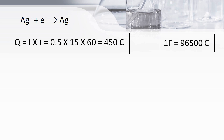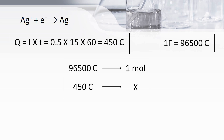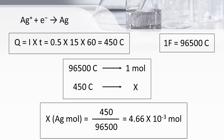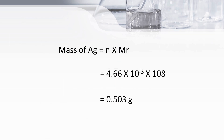According to Faraday's second law of electrolysis, one mole of electrons gives 96,500 coulombs. So if 96,500 coulombs gives 1 mole of electrons, then 450 coulombs gives x moles. When we cross multiply, we get x as 4.66 × 10⁻³ moles of electrons. In the equation, the number of moles of electrons and Ag are in a 1:1 ratio. Therefore, the number of moles of Ag is also 4.66 × 10⁻³. We find the mass of silver using the formula m = n × Mr, substituting 4.66 × 10⁻³ and 108, giving 0.503 g as the final answer.